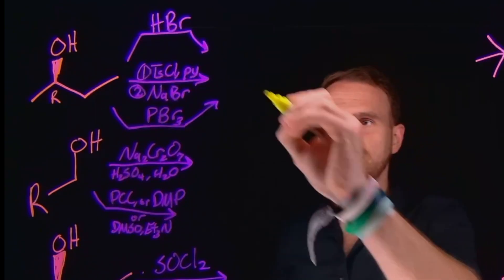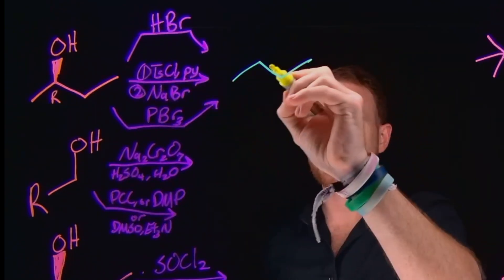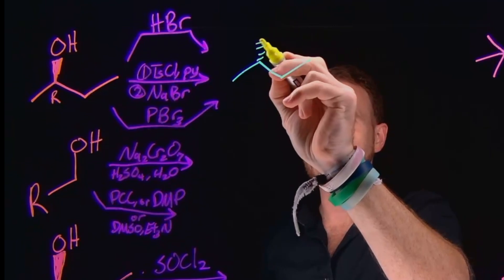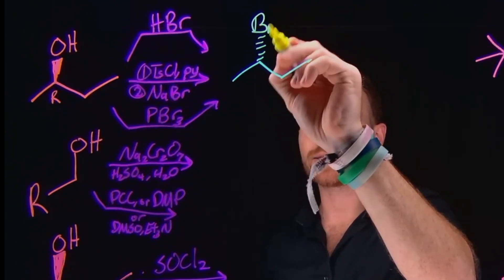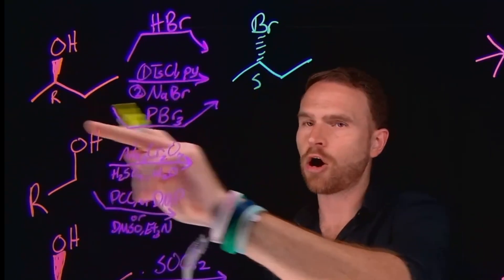In all of these examples, you are replacing the OH group for a bromide, although importantly, you're also inverting the stereochemistry. So you're going from R to S.